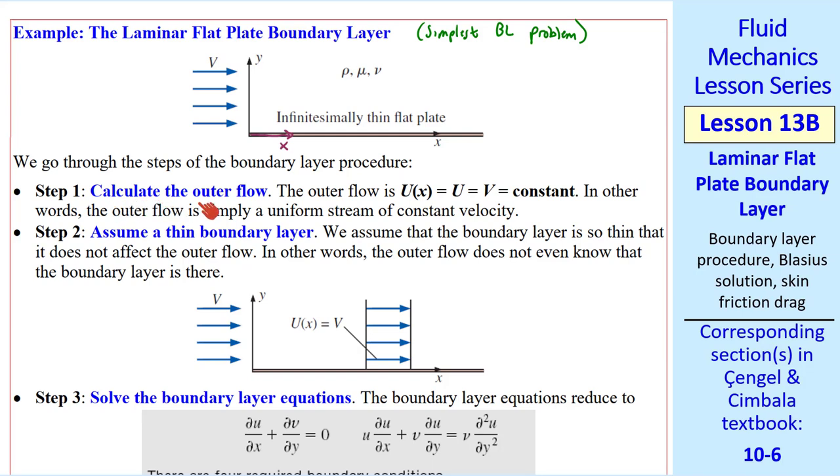Step 1 is to calculate the outer flow. In this case, U of X is just a constant, since it's a uniform stream. That's why this is the simplest boundary layer problem. Step 2 is to assume a thin boundary layer. The key here is that it's so thin that it does not affect the outer flow. From the outer potential flow point of view, there is no boundary layer.